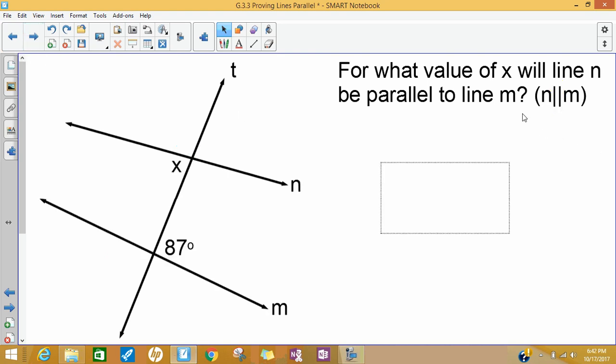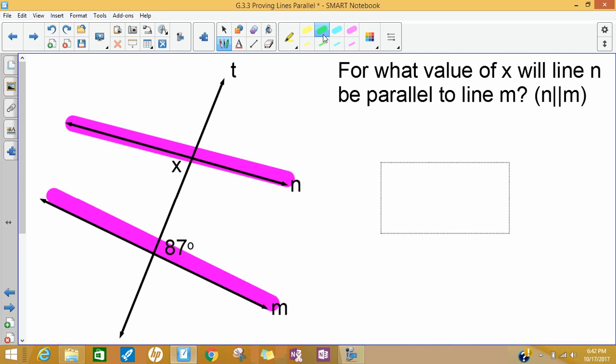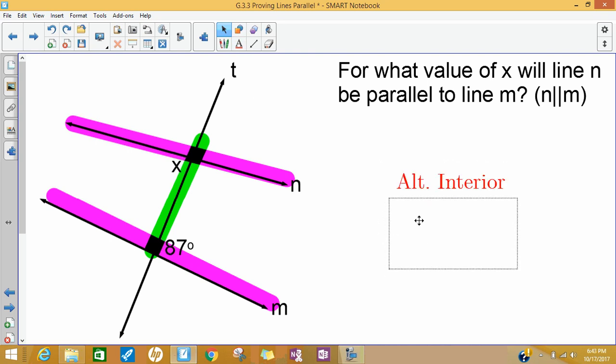Same question, different kind of angle pair. This time I have two interior angles between the two lines n and m. If they're on opposite sides of the transversal, x and 87 are alternate interior angles. If n and m are going to be parallel, then those two alternate interior angles need to be congruent, so x would have to be 87 degrees.